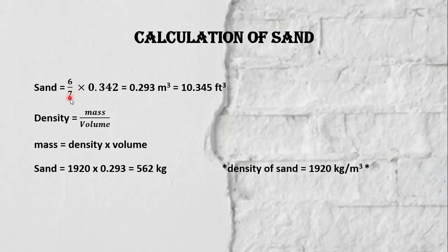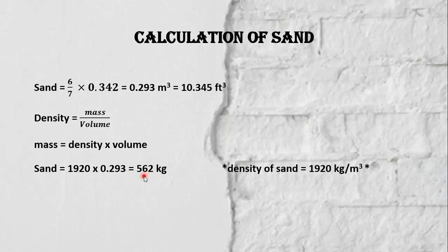The volume of sand becomes 10.3 cubic feet, or 0.293 cubic meters. Convert this volume into mass as well: density of sand is 1920 kg/m³ multiplied by 0.293 m³, so the mass of sand becomes 562 kilograms.